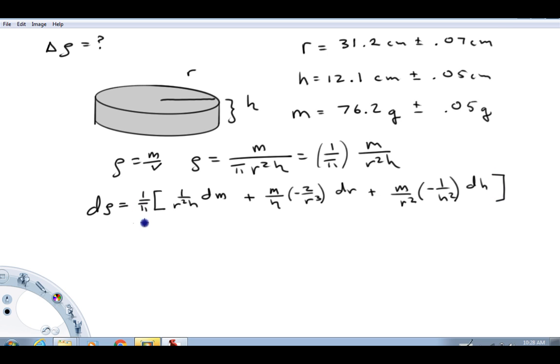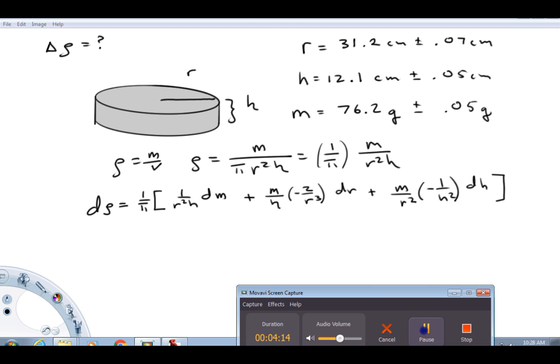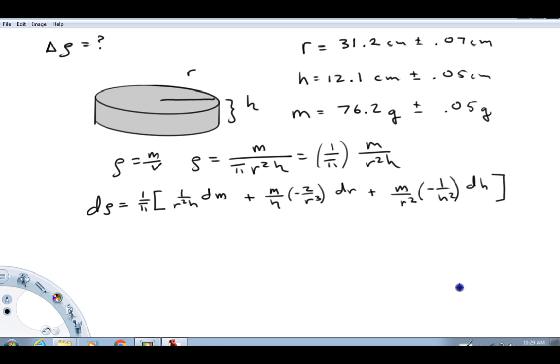And again, the 1 over pi is just sitting out in front of the whole thing. So I'm going to just take a moment, pause this, look it over, make sure that I did everything right. Okay, I'm back. I just looked it over and I think those derivatives all look fine.